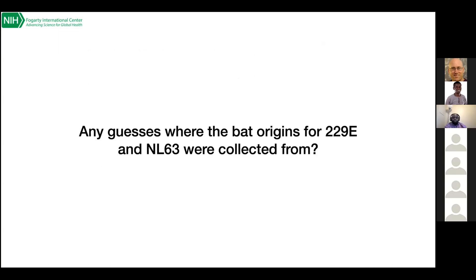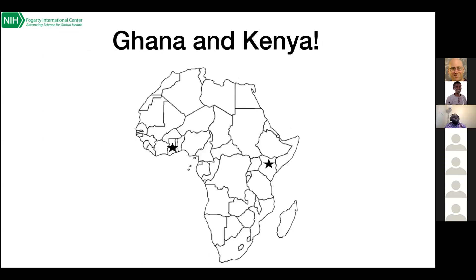Just a quick one: any guesses where the bat origins came from for 229E and NL63? If you've read the paper, you'd know these bats came from Kenya and Ghana — again highlighting the important point that there needs to be a lot more bat surveillance going on in Africa, because there might be a lot we don't know about those bat populations.